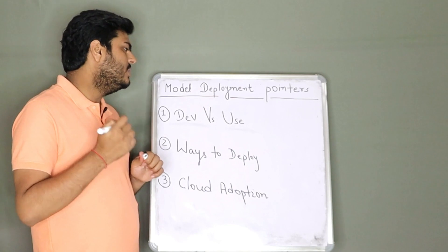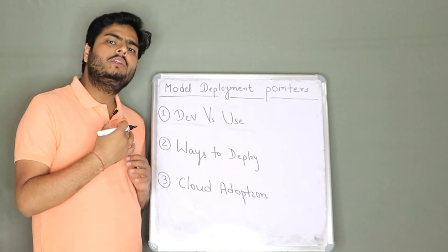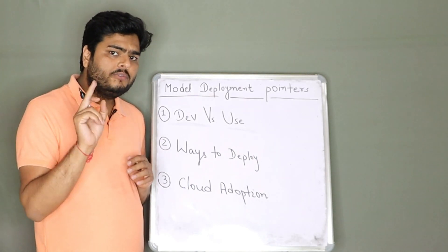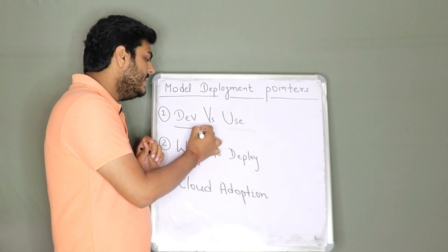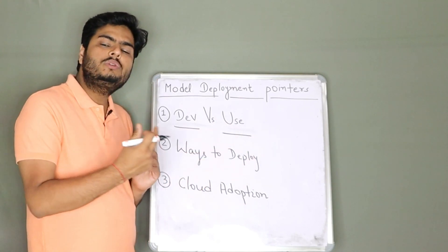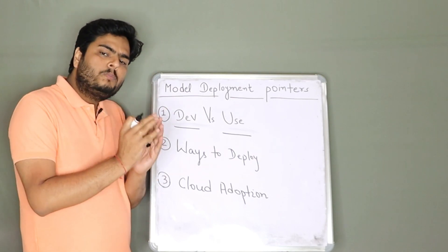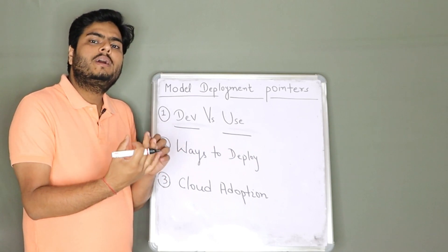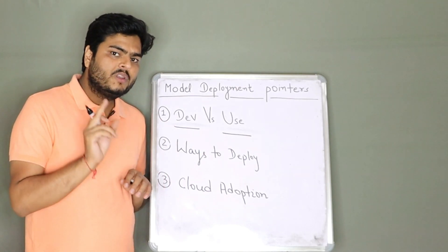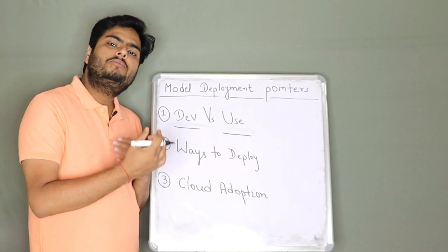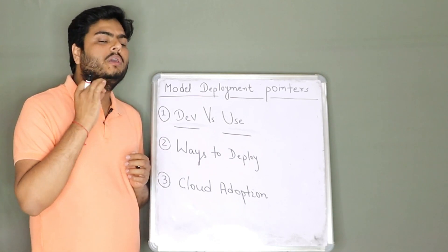First of all, what is model deployment guys? Model deployment is nothing but you built a machine learning or deep learning model and then you want to use it. So the difference is very important to understand. You build a model that is development and then you want to use a model for this using purpose. You deploy it somewhere. The meaning of deployment is model is placed somewhere. Somebody will come and they can use that model in many different ways. But first thing we need to understand is there is a difference between the way you develop a code and the way you deploy a code.